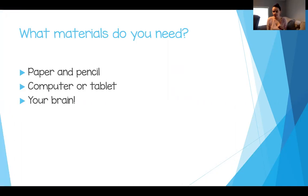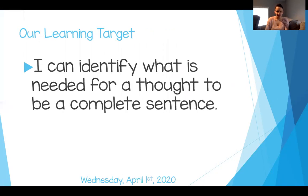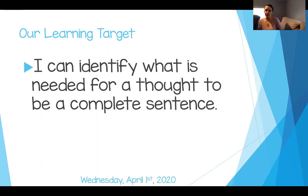Today you need a piece of paper and a pencil — if you have a notebook that's fine, or just a piece of scrap paper. You need your computer or tablet, which you're obviously already on if you're watching this. And you need your brain ready to go and ready to learn. Our target for the day is: I can identify what is needed for a thought to be a complete sentence. We're going to talk and learn about what elements we need in our sentences to make sure they are complete sentences, not just little bits of words stuck together.